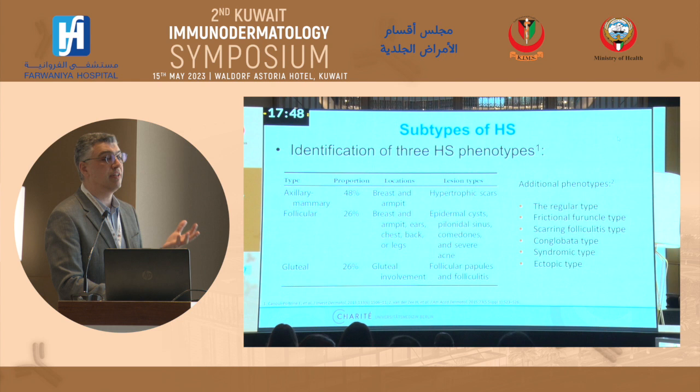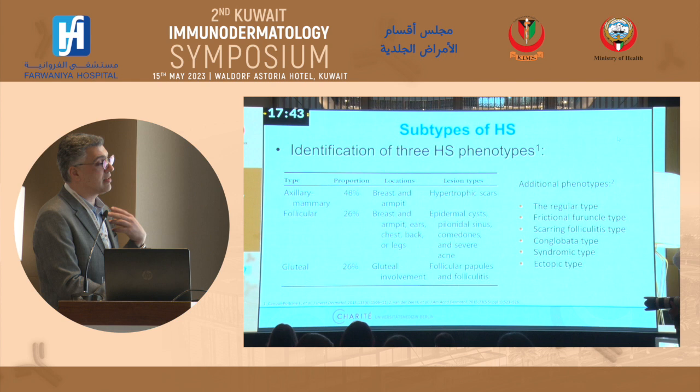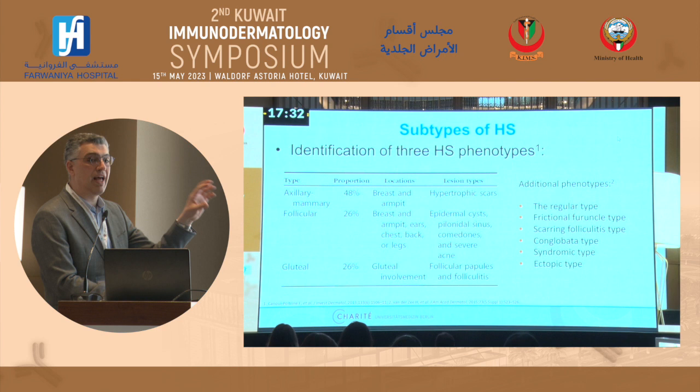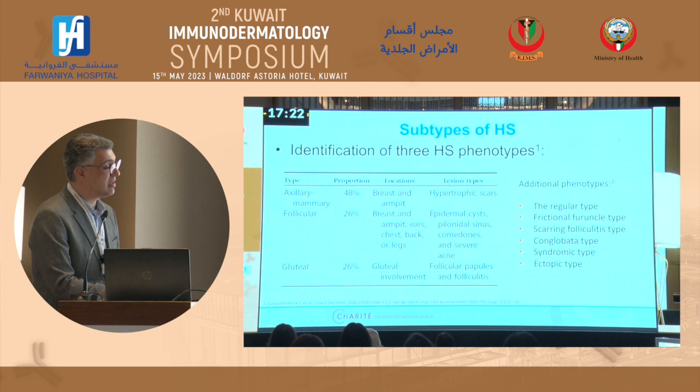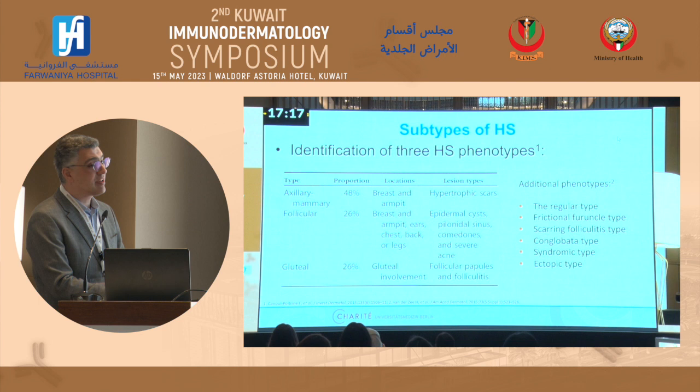Even though it appears easy and clear, this disease is not easy because it has different clinical phenotypes. You can have a scarring disease in the axillary areas but also at the same time inflammatory nodules all over the body. We don't have one phenotype — unlike psoriasis with its thick plaques. With HS, there are several things to observe, and with these different phenotypes, diagnosis becomes difficult.